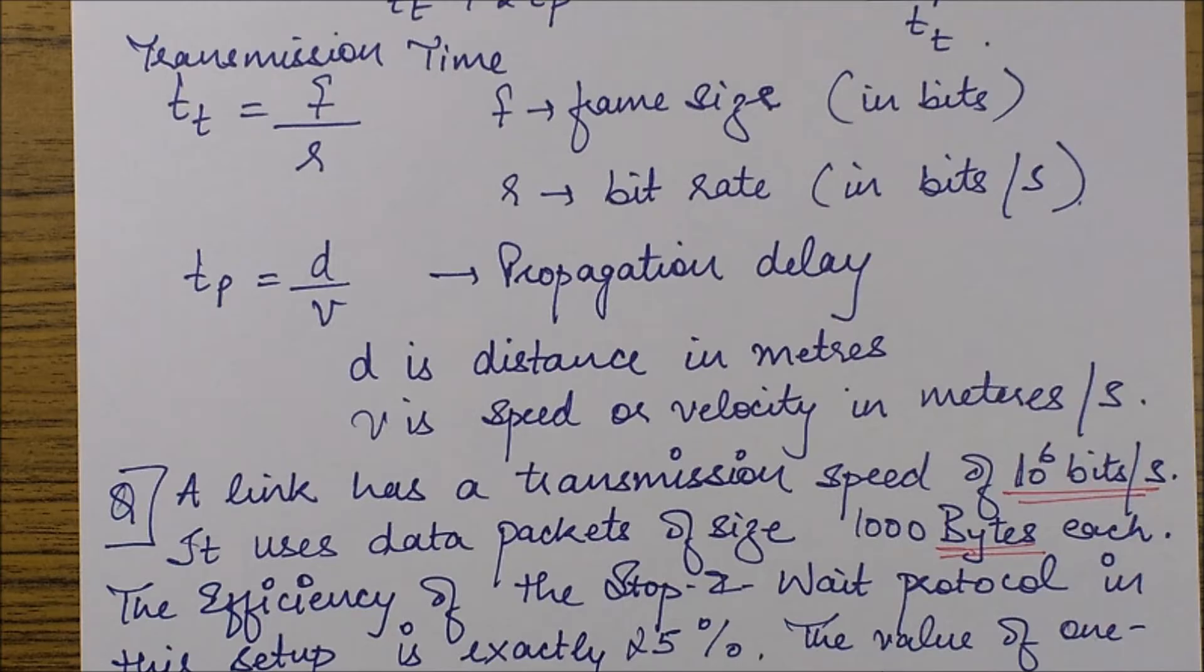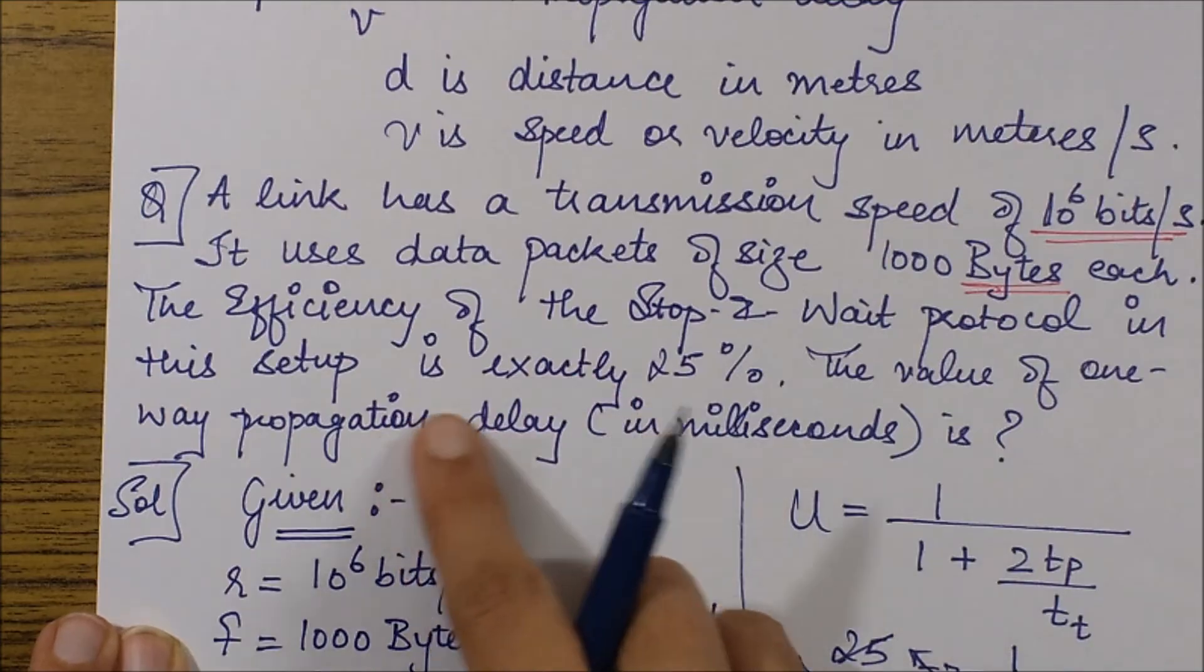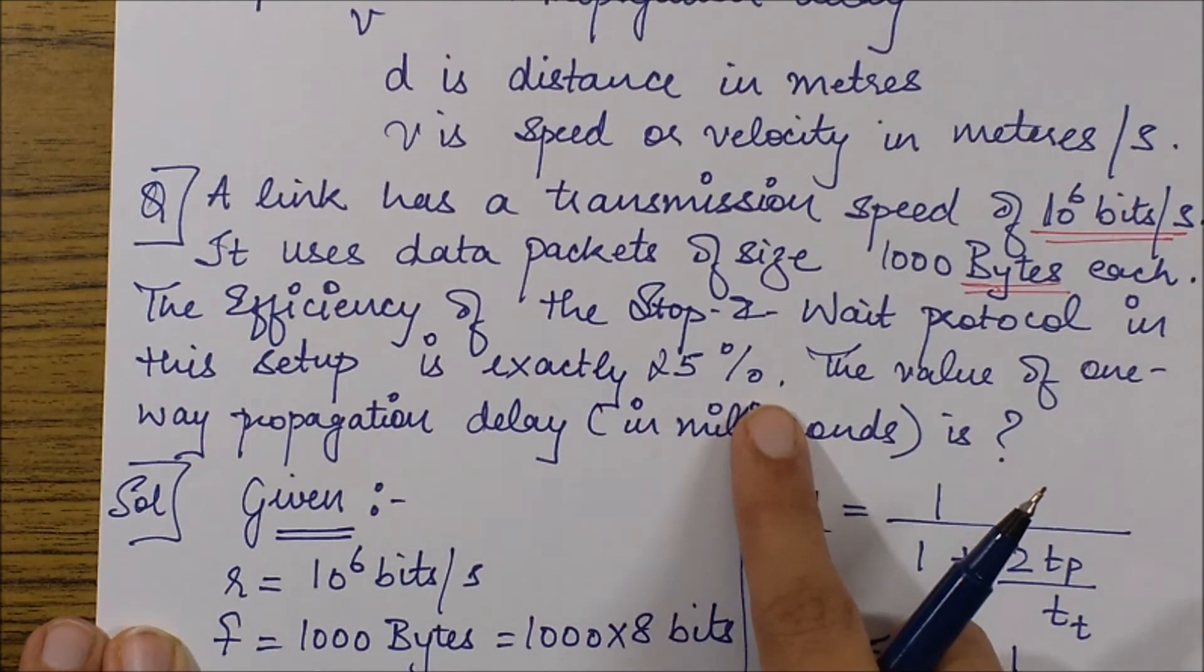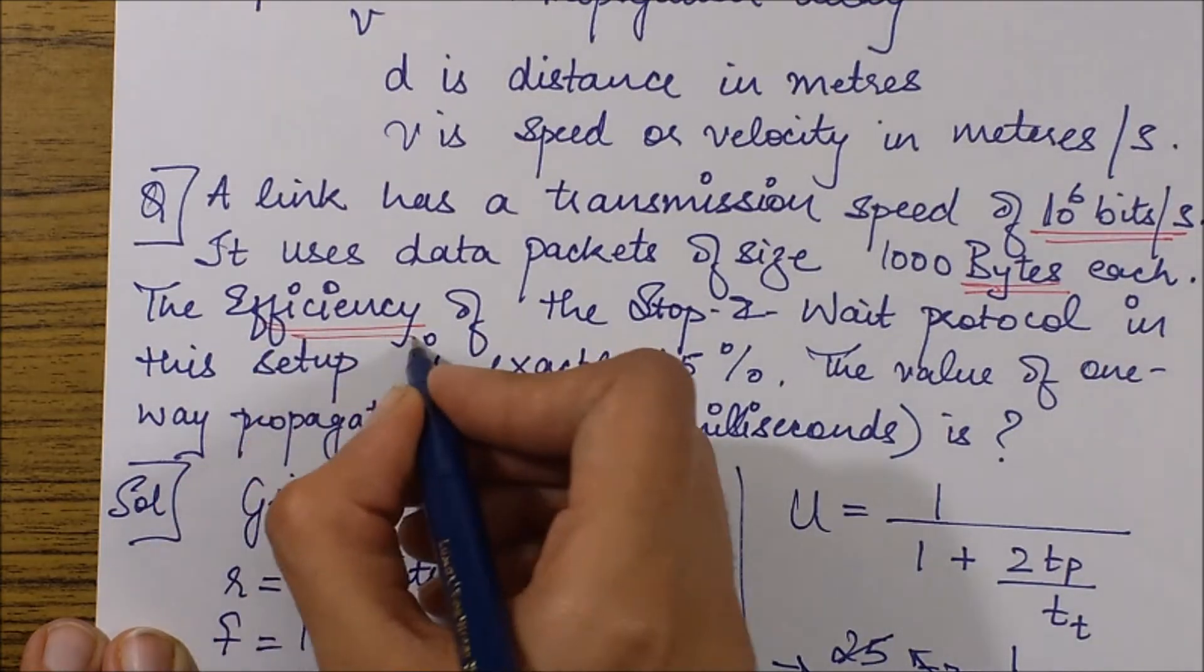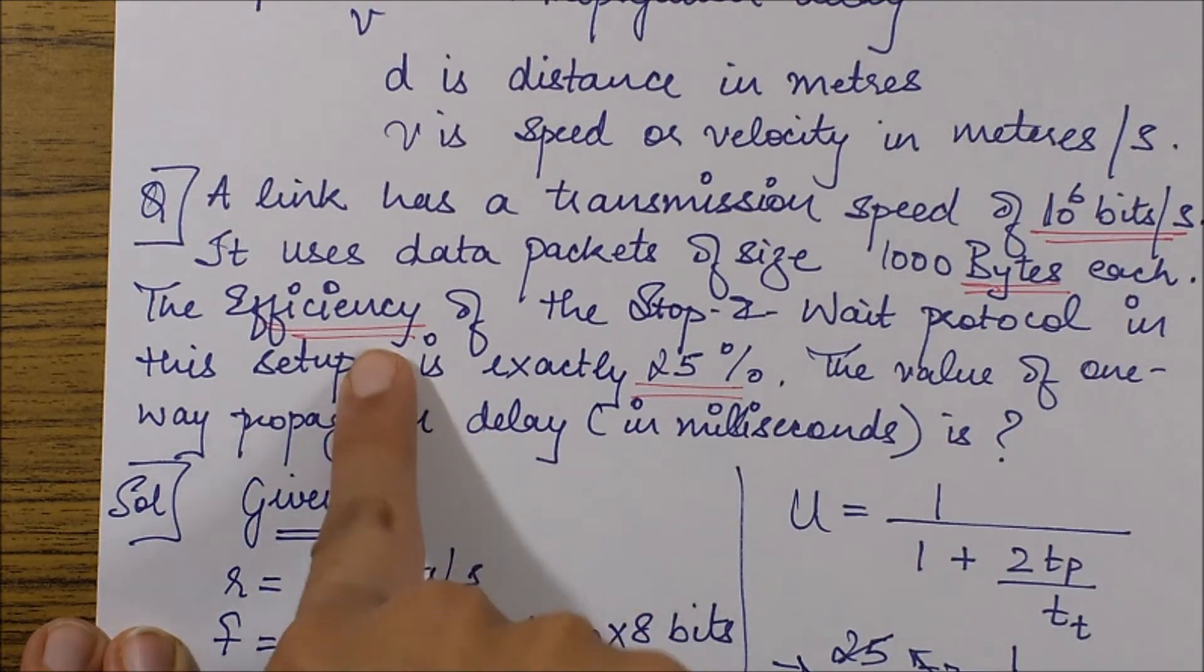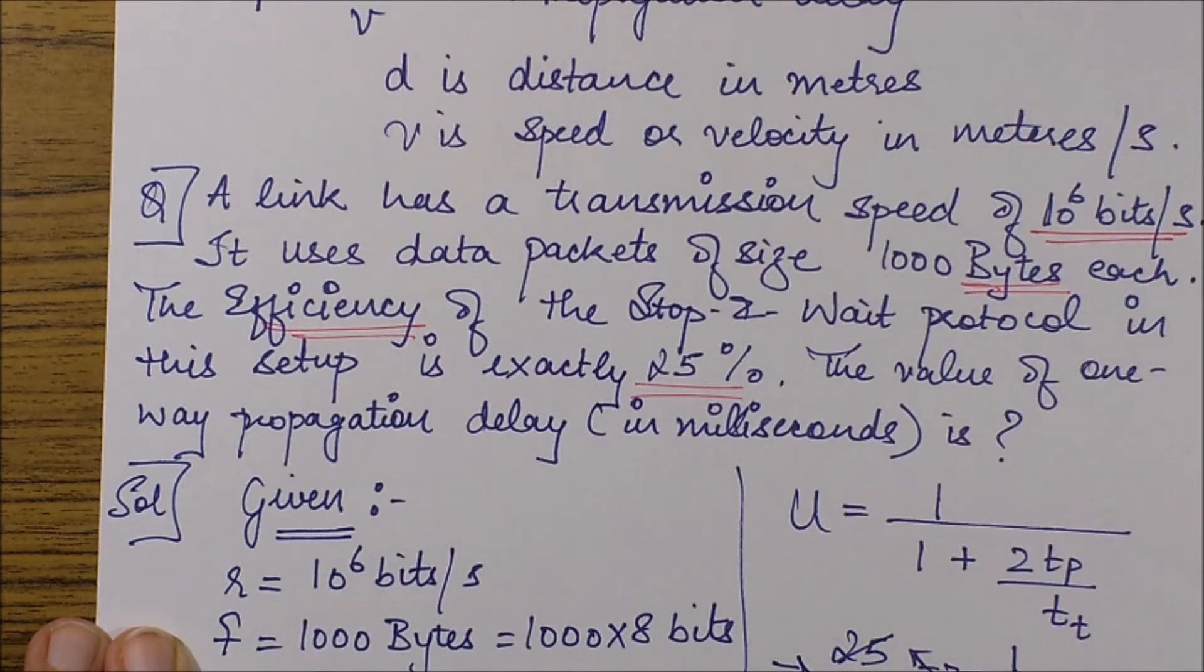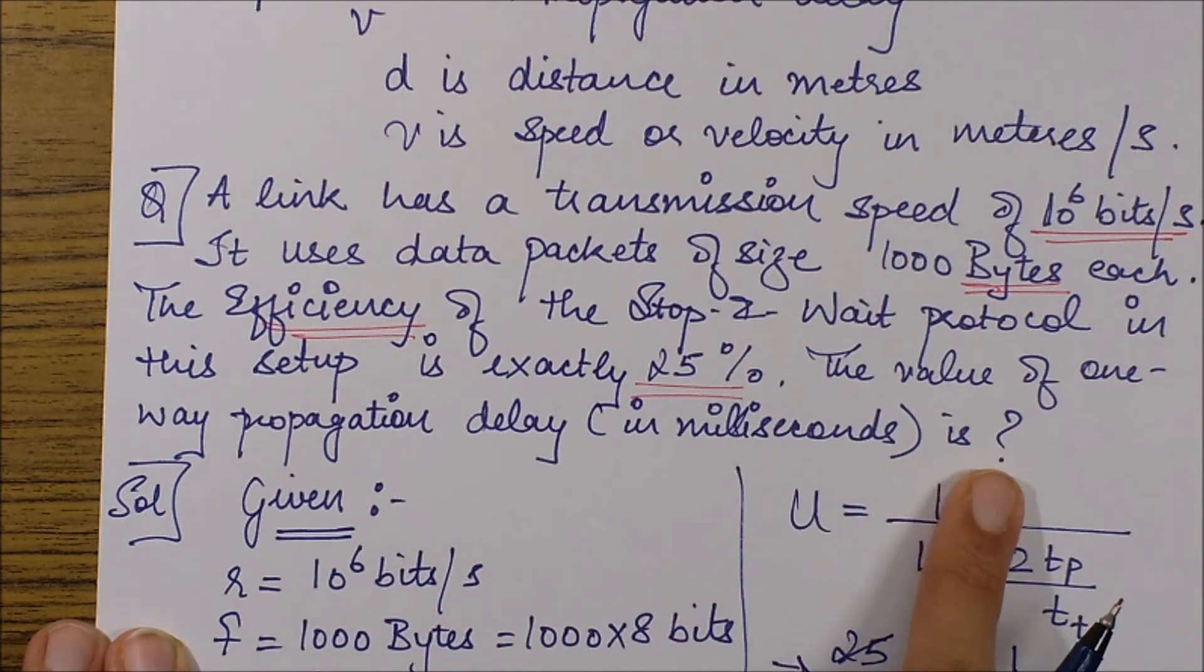The efficiency of the stop and wait protocol in this particular setup is exactly 25 percent. Please note the efficiency is another synonym for channel utilization. The value of one-way propagation delay is asked - they've asked for tp, the propagation delay.